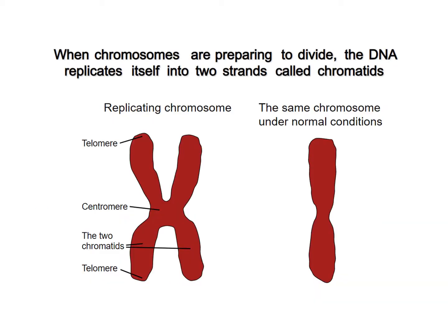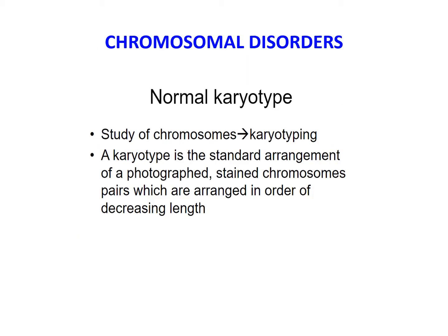To emphasize: in a metaphase spread, the individual chromosomes take the form of two chromatids connected at the centromere. The karyotype, therefore, is the standard arrangement of photograph-stained chromosome pairs, which are arranged in order of decreasing length.